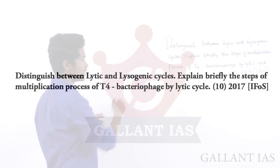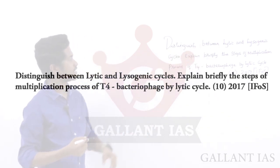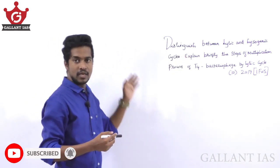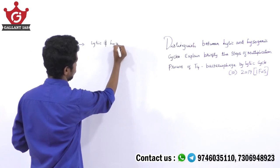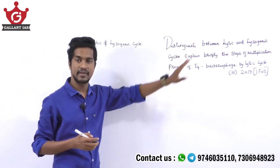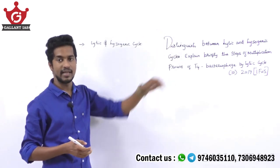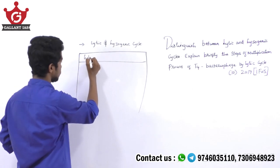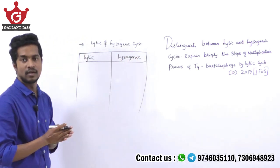This is a benchmark question — maximum you get two sides to address it, and the question has two parts. The first part demands the differences between lytic and lysogenic cycle, and the other part demands the steps of multiplication of T4 bacteriophage. You should write a brief intro about both cycles, and represent the differences in a tabular form.